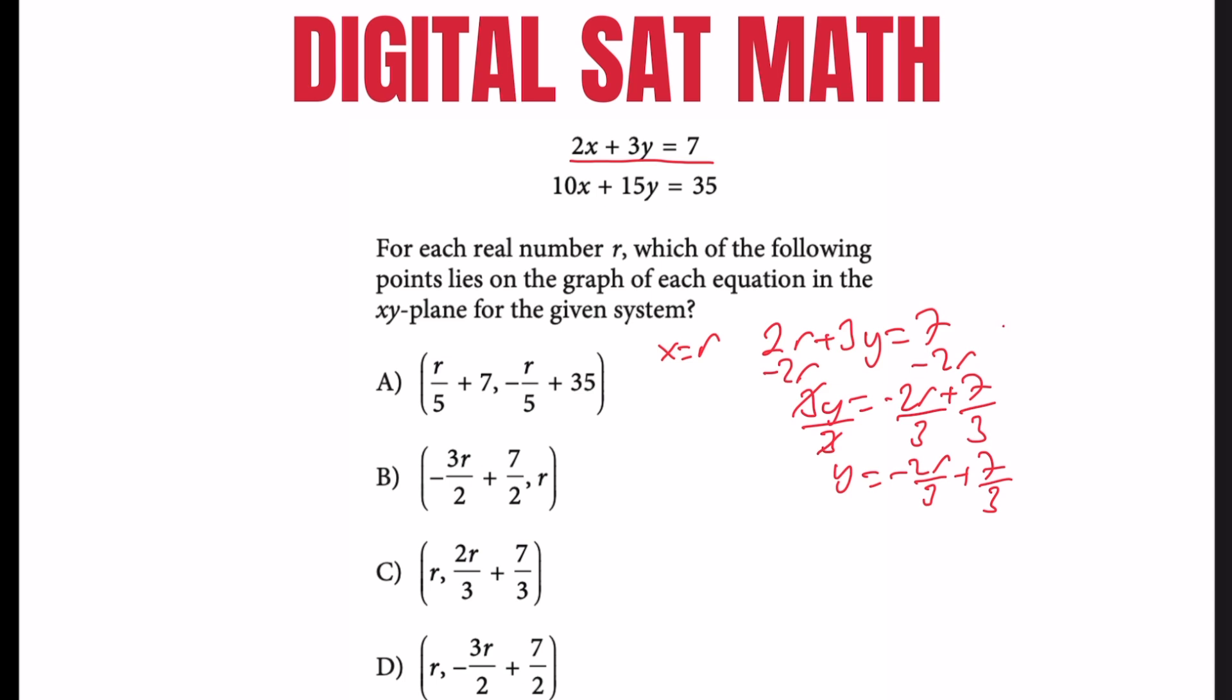In the choices we should have (r, -2r/3 + 7/3) for the x and y, but if you pay attention to the choices, there is no such choice. So we substituted r for the x but this answer is not in the choices.